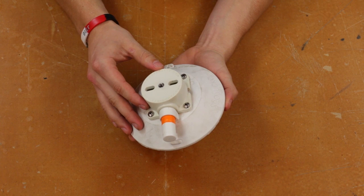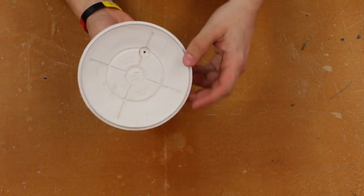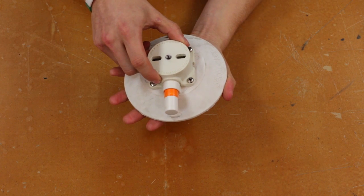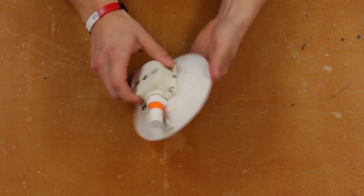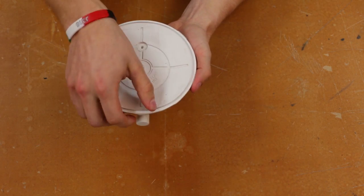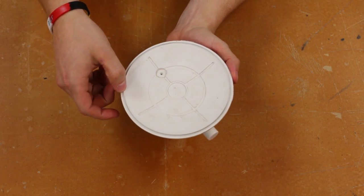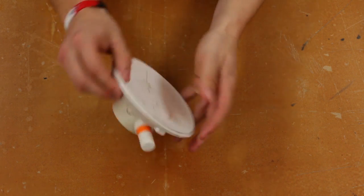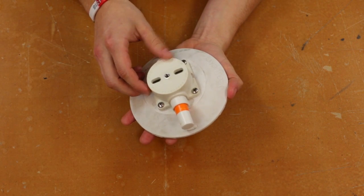There are really only two functional components in the Seasucker vacuum mount: the vacuum pad and the vacuum pump. The vacuum pad has to make a good seal for the Seasucker to hold, so you should check the sealing edge and make sure there are no nicks or cuts or other damage. Run your finger around the sealing edge to feel for damage while inspecting it visually. A damaged vacuum pad should be replaced before using your Seasucker again.